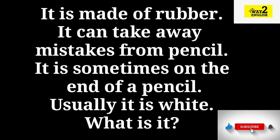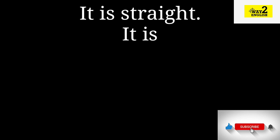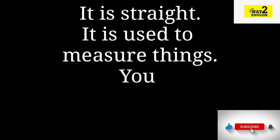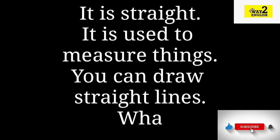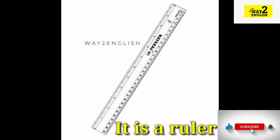It is made of rubber. It can take away mistakes from pencil. It is sometimes on the end of a pencil. Usually it is white. What is it? It is an eraser.